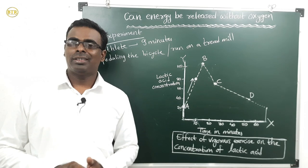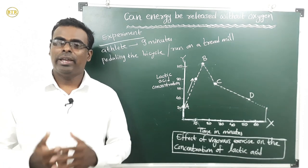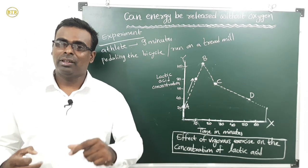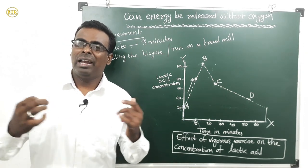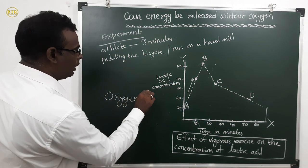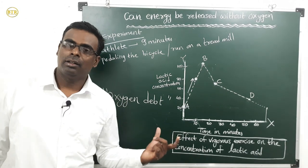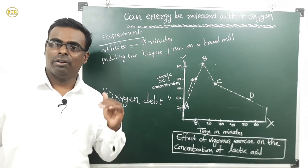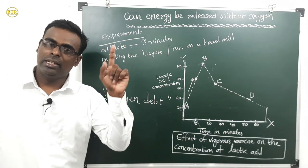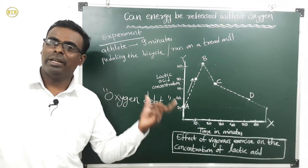Whenever we are doing strenuous or vigorous exercise, in our muscles there is a deficiency of oxygen — low oxygen levels are present in our body. That condition is called oxygen debt. Whenever a person undergoes vigorous exercise, a deficiency of oxygen builds up in the body, and that condition is called oxygen debt.